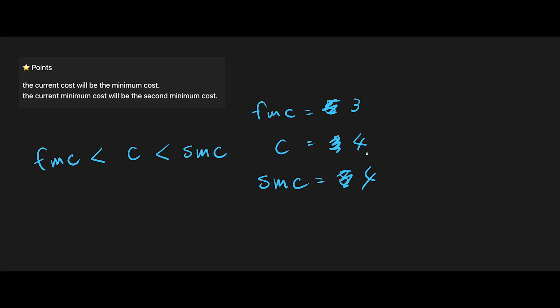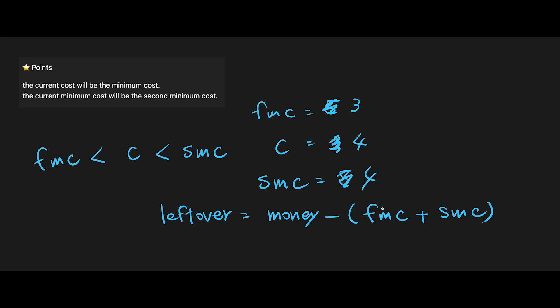We repeat this process one by one, and in the end we will get the two minimum costs: first minimum cost and second minimum cost. After that, the leftover should be the money argument minus first minimum cost plus second minimum cost. If leftover is greater than or equal to 0, return the leftover. If not — meaning leftover is negative — return money itself. That is the basic idea to solve this question, so let's get into the code.